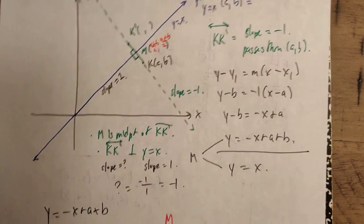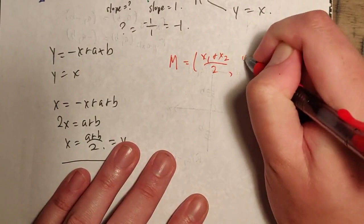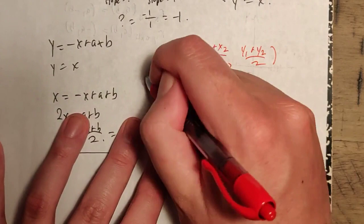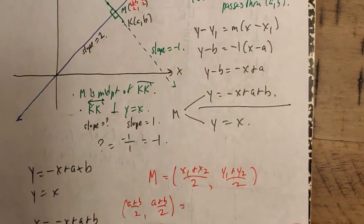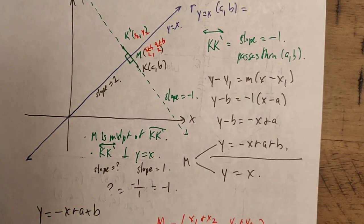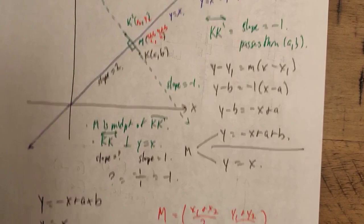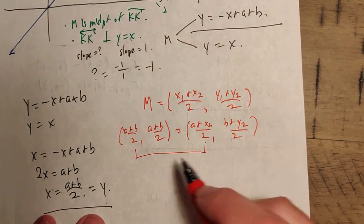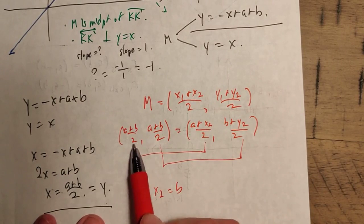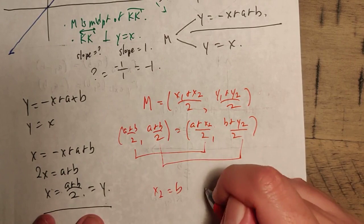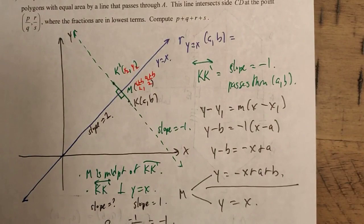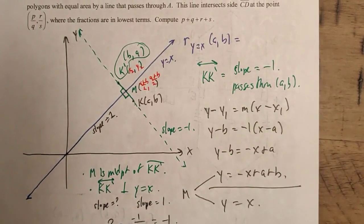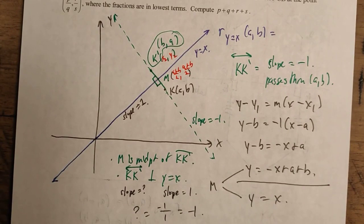Now we can solve for K prime because we know M is the midpoint. The coordinates of M are (A plus B)/2 comma (A plus B)/2. Using the midpoint formula with K at A, B and K prime at x2, y2: (A plus x2)/2 equals (A plus B)/2 and (B plus y2)/2 equals (A plus B)/2. So x2 equals B and y2 equals A. The image K prime is B comma A — the coordinates are simply swapped.